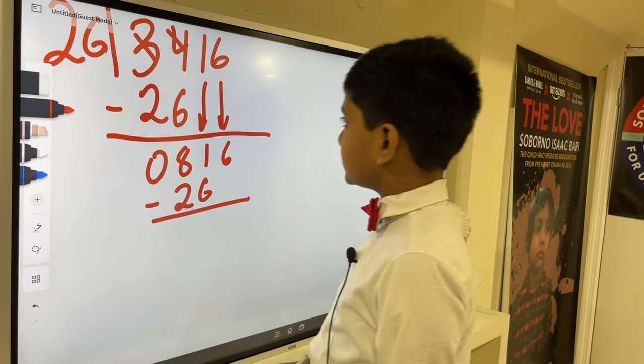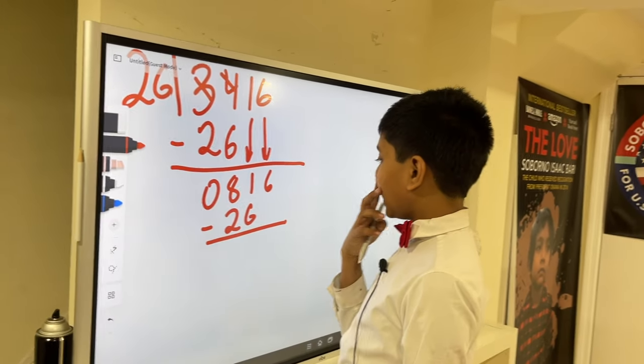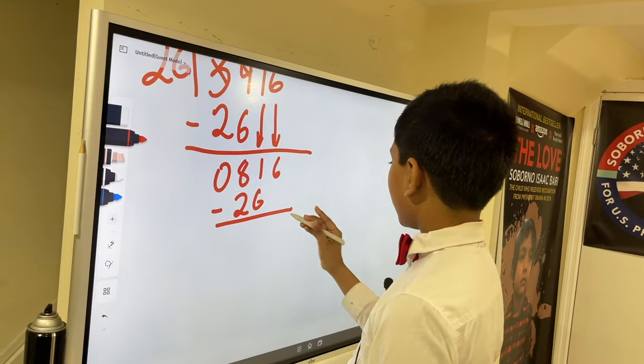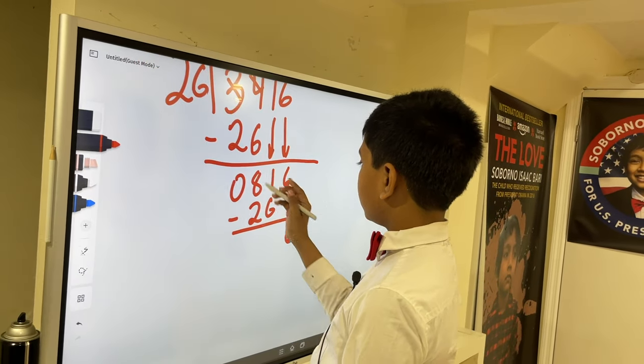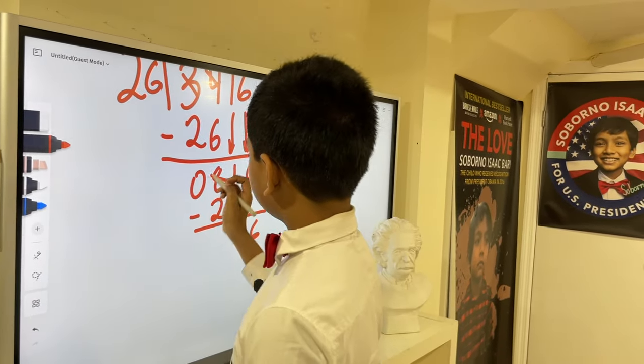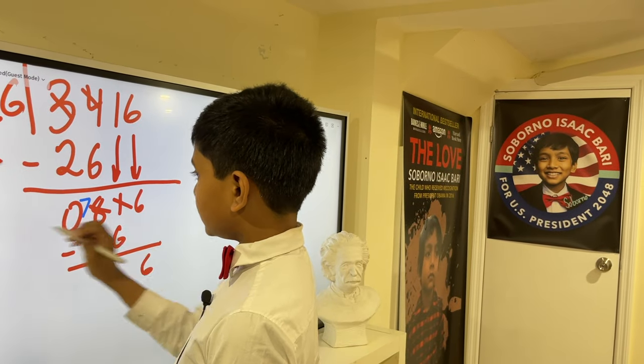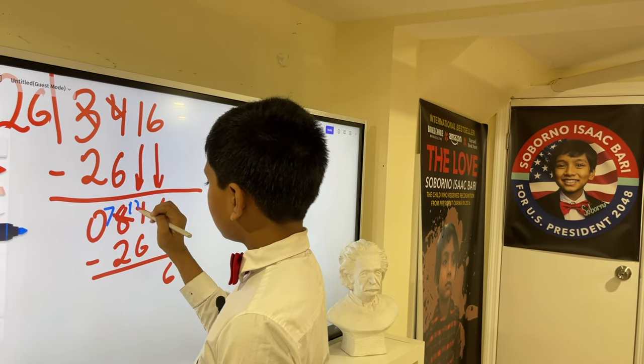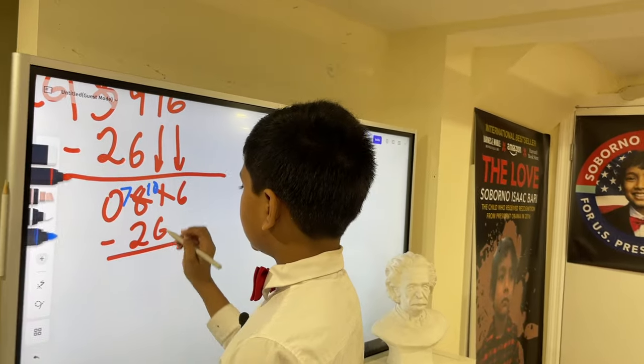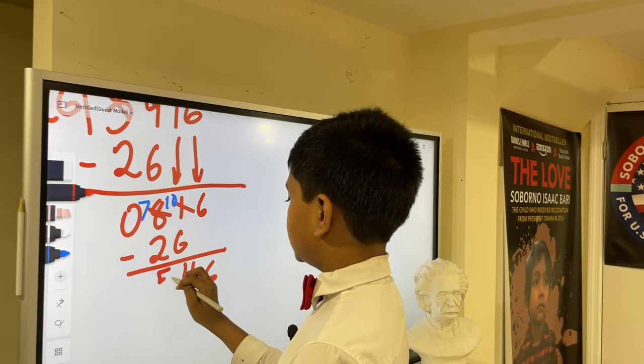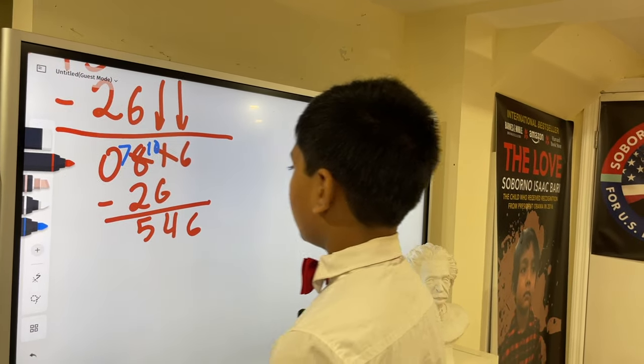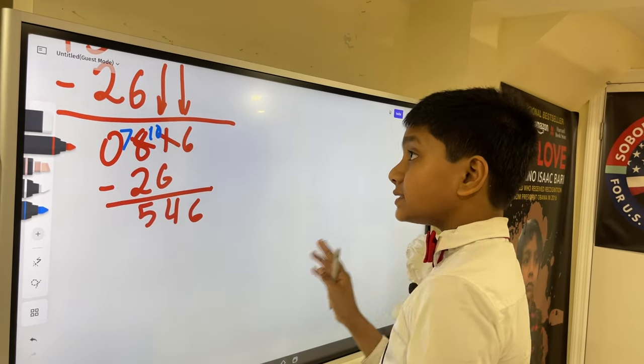Put 26 directly below them. And then, all you have to do is subtract. 6. Now, you've got to regroup again. So, make this a 7. And, make this a 10. And, 10 minus 6 is 4. 7 minus 2 is 5. 546.